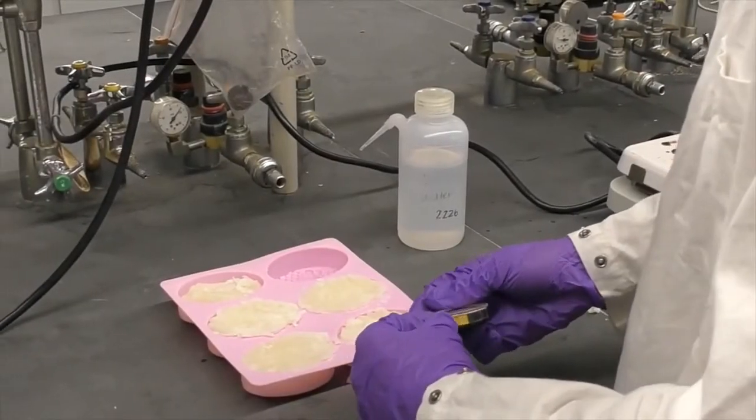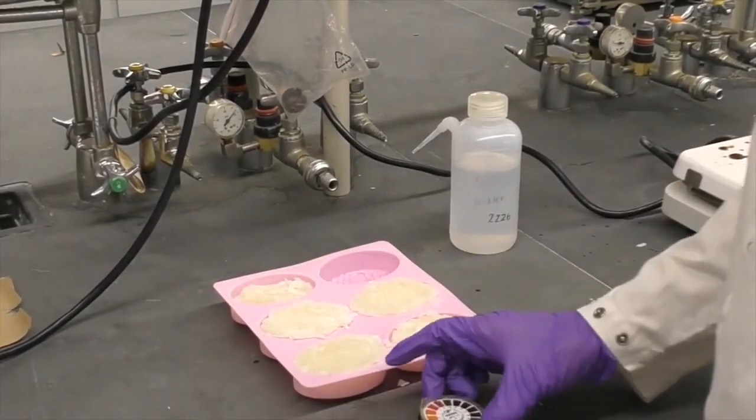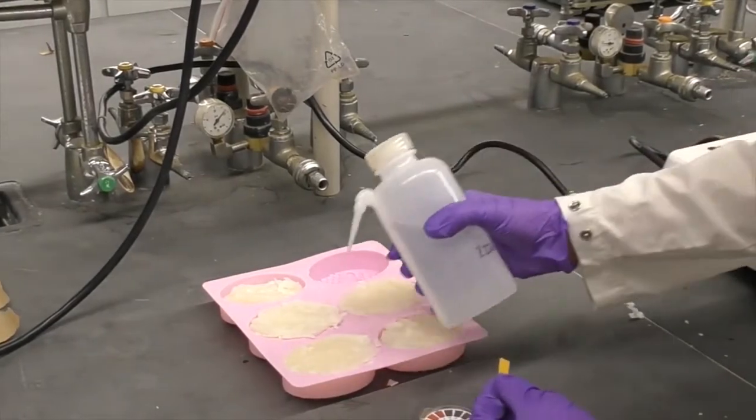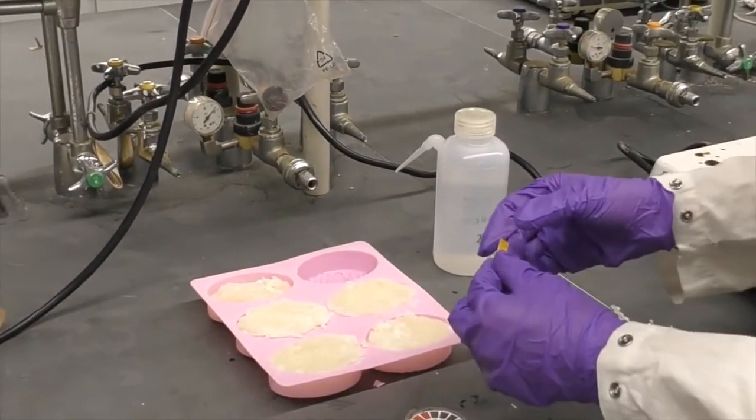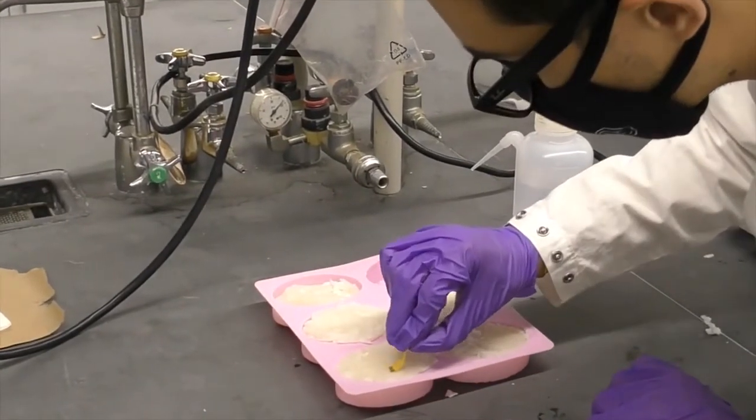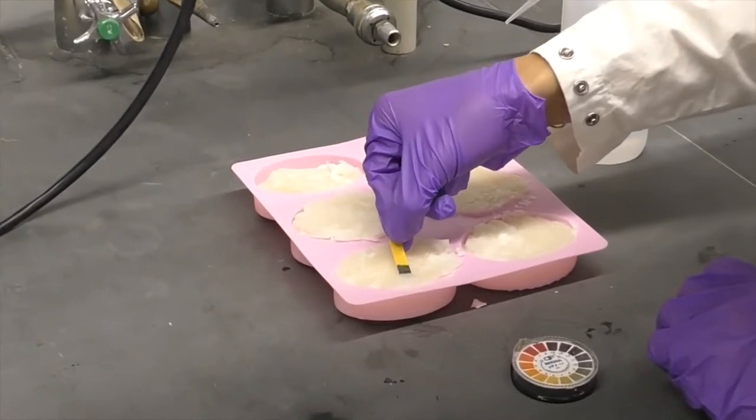Measure the pH of the soap using pH paper. Add a few drops of water to the surface and then rub the pH strip on it. Record this value as the pH at day zero. The pH of the soap should be around 11 due to the presence of unreacted sodium hydroxide. This is very alkaline and therefore it is not safe to use.